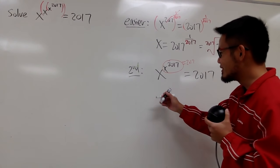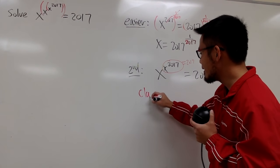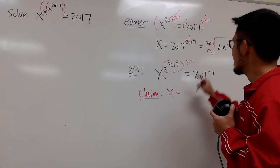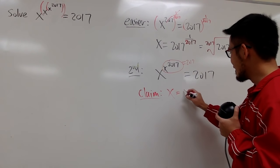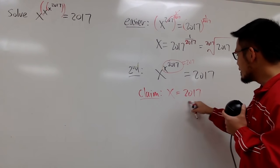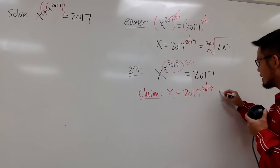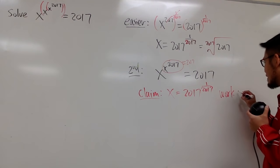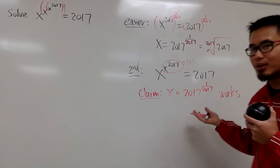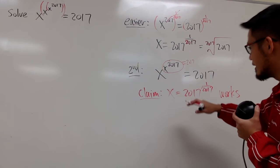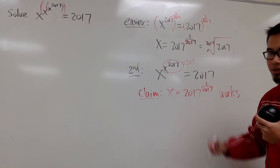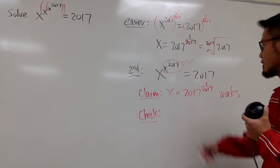So, in fact, let me just tell you that I'm going to claim x equals this, and I'm just going to use the power notation. 2017 to the 1 over 2017 is a solution. And in fact, that's the only solution for this equation, but let me just say this number works. So let me just convince you by doing the check.